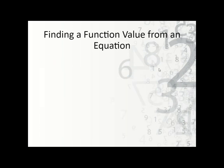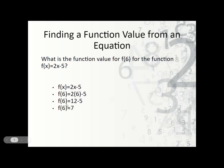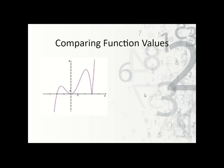How do we find a function value from an actual equation? What is the function value for f of 6 for the function f(x) = 2x minus 5? We take f(x) = 2x minus 5 and plug 6 in for x. So f of 6 equals 2 times 6 minus 5. Well, 2 times 6 is 12, and 12 minus 5 is 7. So the function value for f of 6 is 7.